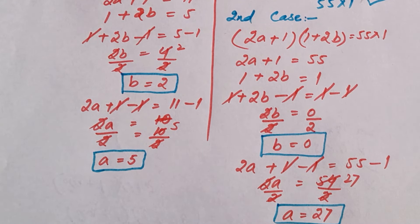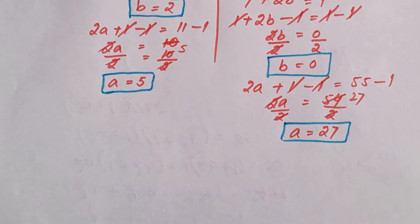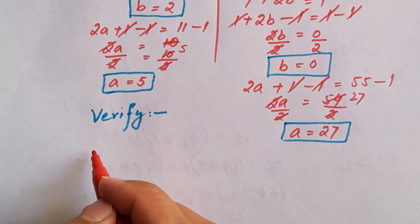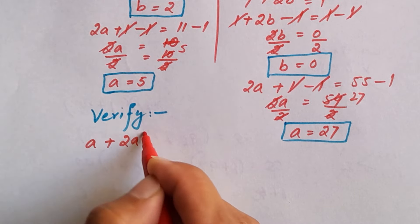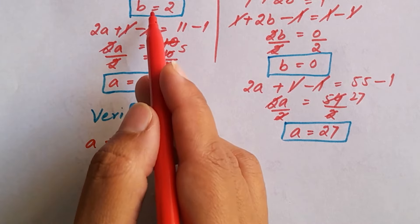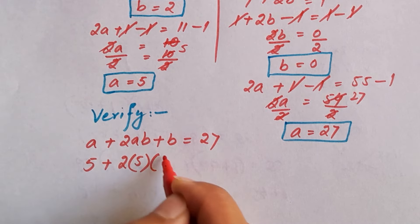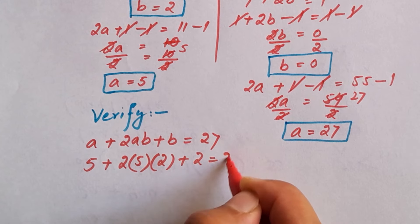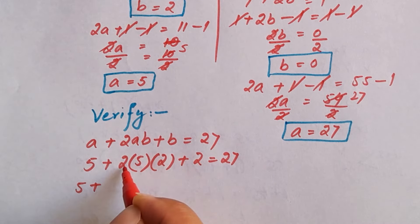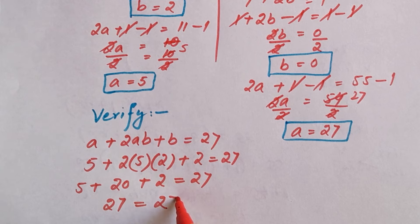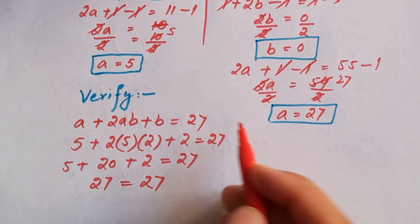We found the values of a and b from both cases, but now we need to check and verify whether these values are correct. Putting b equals 2 and a equals 5 into the equation a plus 2ab plus b: 5 plus 2 times 5 times 2 plus 2 equals 5 plus 20 plus 2 equals 27, which equals the right-hand side. These values satisfy the equation and are correct.